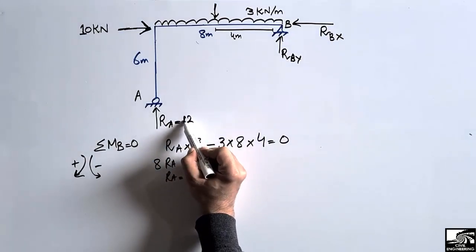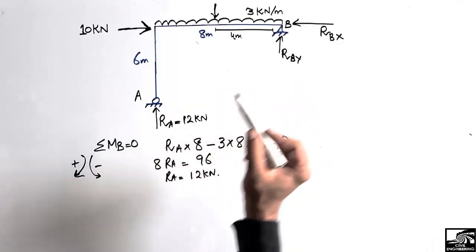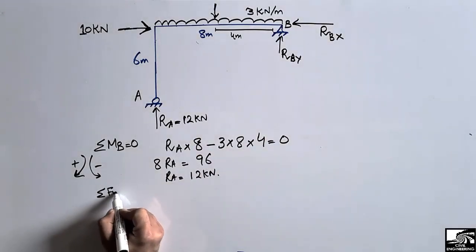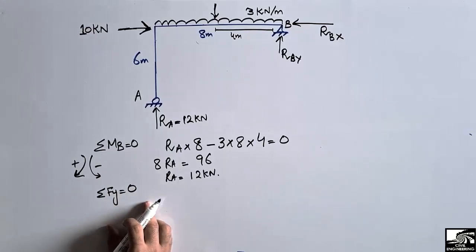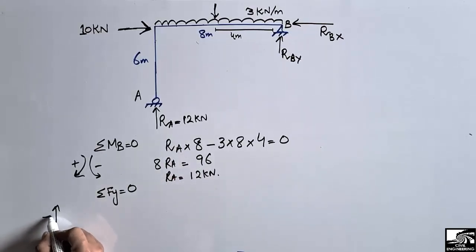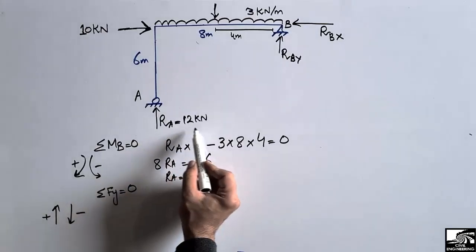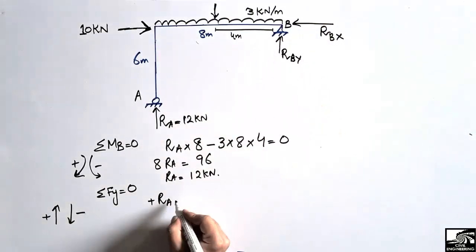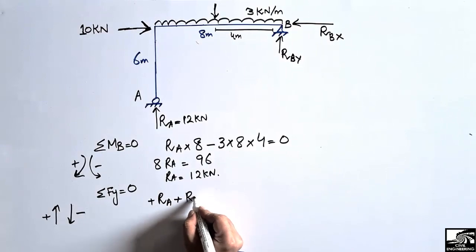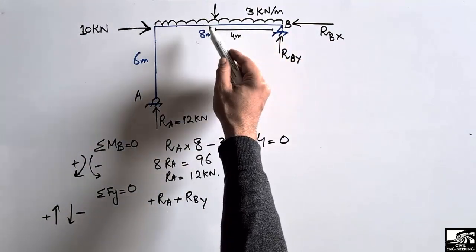RA is equal to 12 kN. Now to find RBY, which is also a vertical force, we take the equilibrium equation: summation of vertical forces equal to zero. Upward forces are positive, downward forces are negative. The upward forces are RA and RBY (assumed upward), and the downward load is the distributed load of 3 kN per meter.